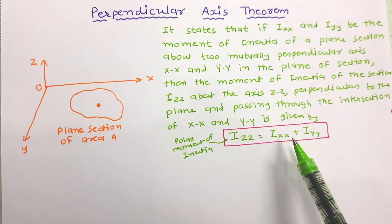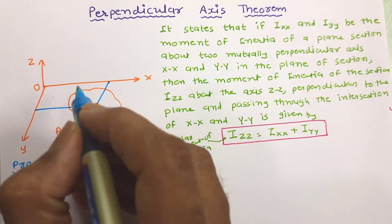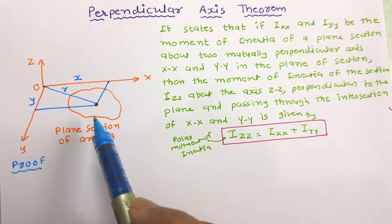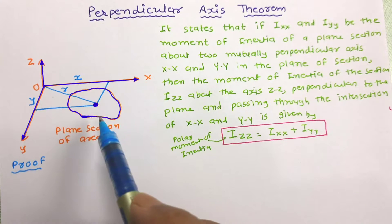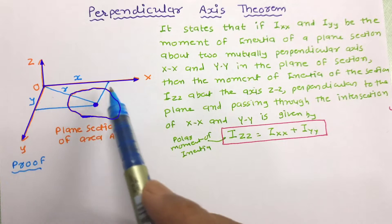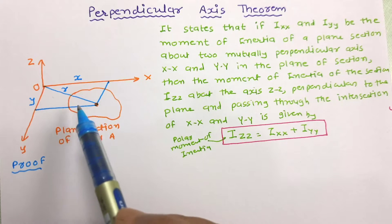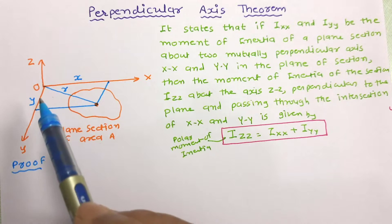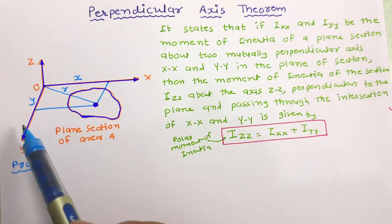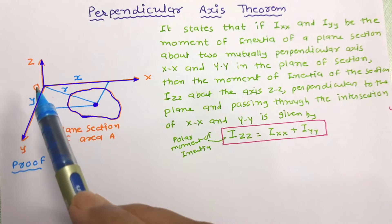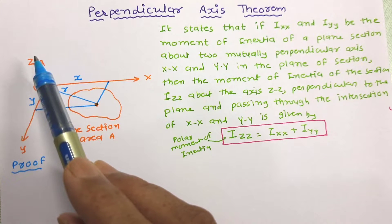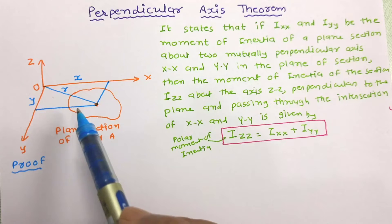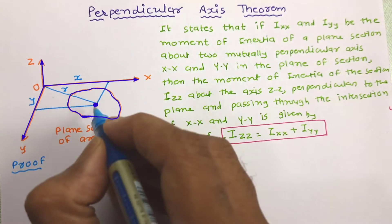Now let us try to prove this. Here in this figure, a plane section of area A is lying on the XY plane as shown. OX and OY are two mutually perpendicular axes, and OZ is perpendicular to these two axes. Now consider this small area DA.